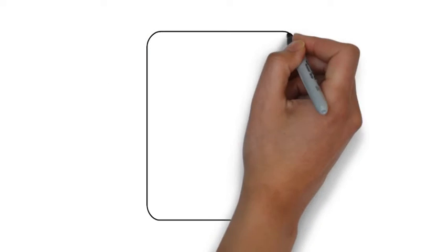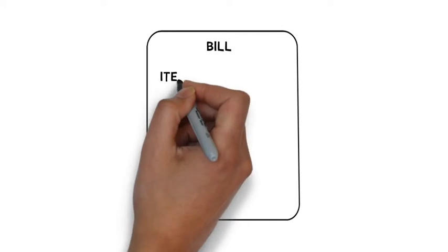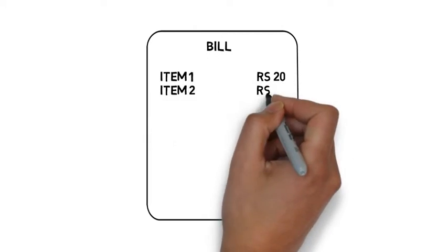After eating in a restaurant, you are asked to pay the bill. Whenever you pay the total amount of the bill, some additional charges are imposed on it, which are popularly known as taxes.